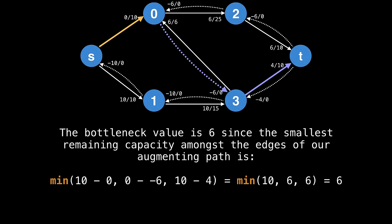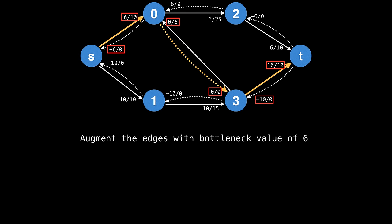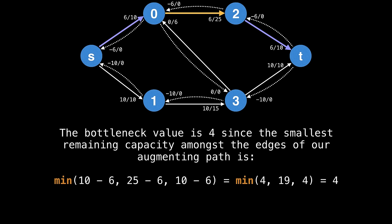Here's another augmenting path from the source to the sink, you'll notice that we're actually using one of the residual edges we created earlier in this path. You'll also notice that there are two purple edges in this slide. This is just a coincidence, since both of those edges have the same bottleneck value of six, then we augment the flow as we do. I'll let the animation play for this next one.